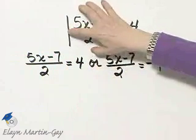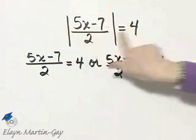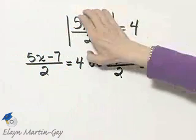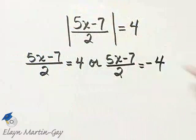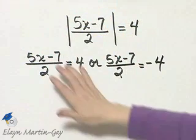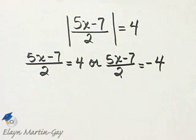And I hope that makes sense to you. If this equals 4, the absolute value is of course 4. If this expression equals negative 4, the absolute value is 4 also. So now let's solve each of these linear equations.